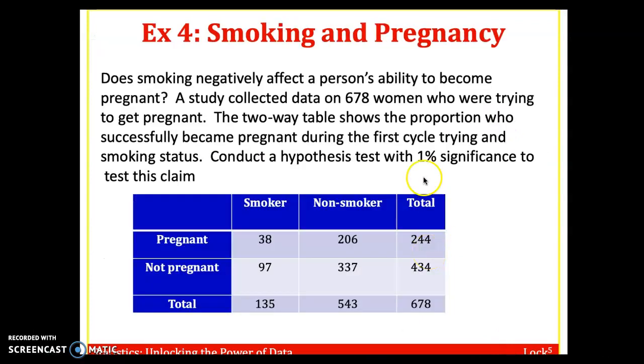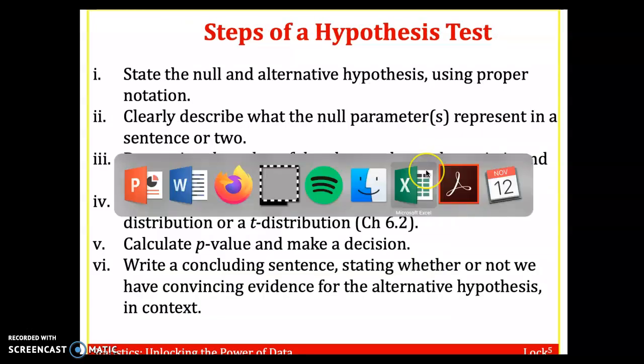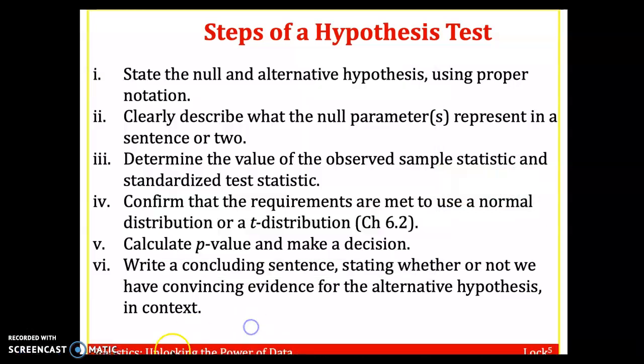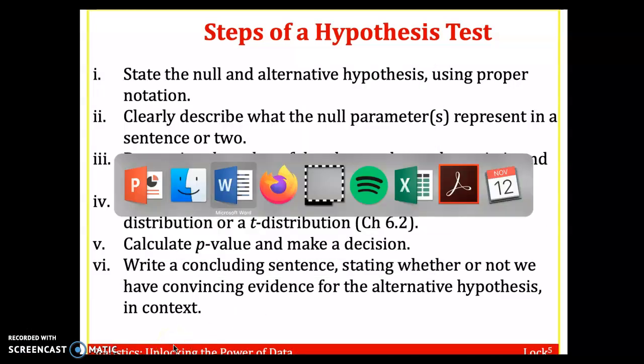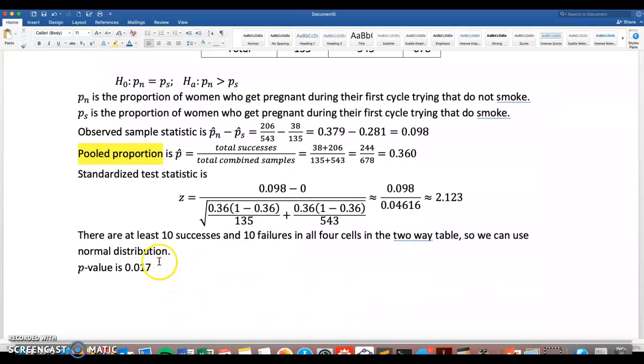We're looking at confidence level 1% significance, so we want to conduct a hypothesis test with 1% significance. Since p-value of 0.017 is greater than significance level of 1%, we do not reject the null hypothesis.